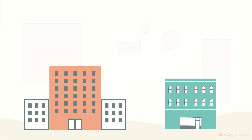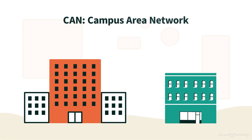A campus area network, or a CAN, can interconnect nearby buildings, each of which have a LAN within the building. We oftentimes see this in university or business campuses.